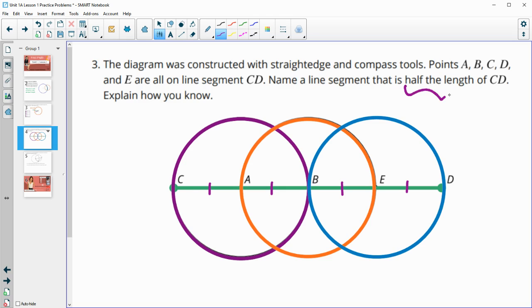So if we wanted to name one that's half the length of CD, CD is the whole thing. It's composed of four of these little segments. So as long as you just choose a segment that's two of these littler ones long. So you could say CB because that's two segments long. You could say AE or you could say BD. Each of those are composed of two of these little radii, so they would be half the length of CD.